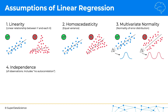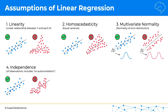The fourth assumption is independence of observations, and this includes the term no autocorrelation — sometimes you'll see the assumption titled as no autocorrelation. What that means is that we don't want to see any kind of pattern in our data. A pattern in the data like we see here indicates that our rows are not independent, that some rows are affecting other rows, and so on. A classic example of this would be the stock market, where previous prices affect future prices, which affect future prices, and so on. So in this case, we wouldn't apply a linear regression model.